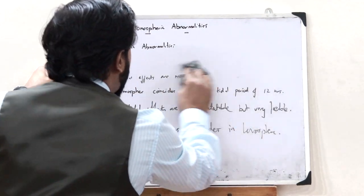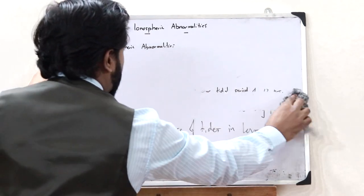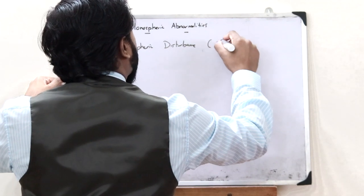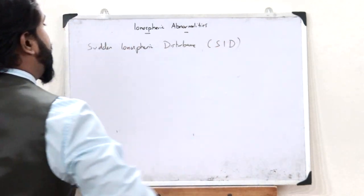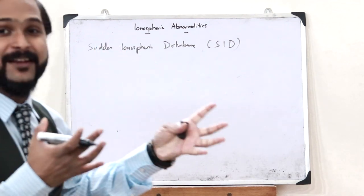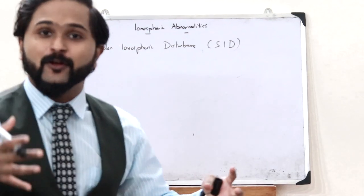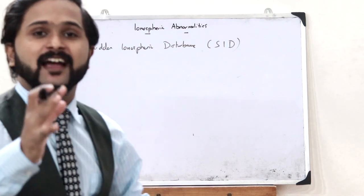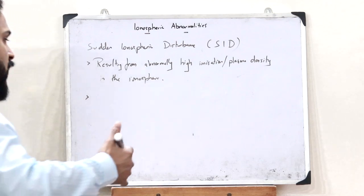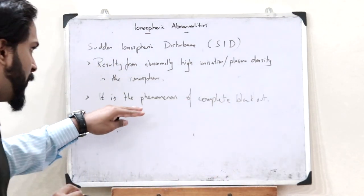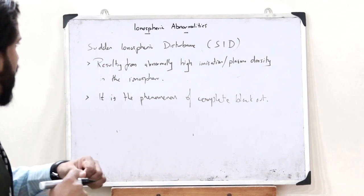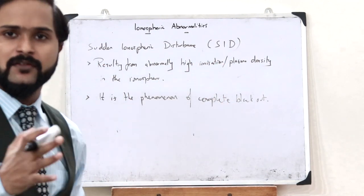Next, we have something referred to as sudden ionospheric disturbance, also referred to as SID. This happens due to the abnormally high ionization or plasma density in the ionosphere. In this case, a complete blackout is observed. So it is a phenomenon of a complete blackout — this is what you refer to as sudden ionospheric disturbance.